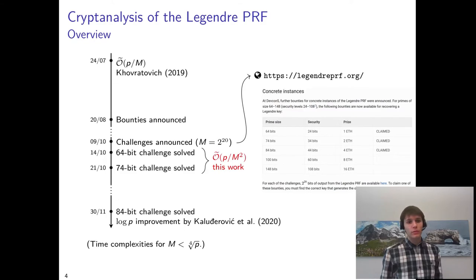In particular, we give a p over m squared attack when m is not too large, and this allowed us to solve the 64 and 74-bit challenges.